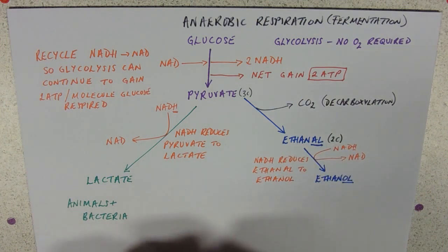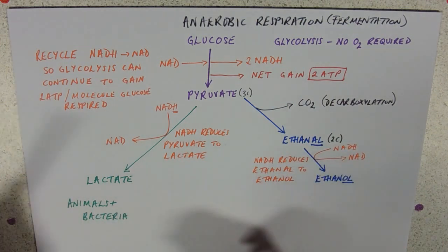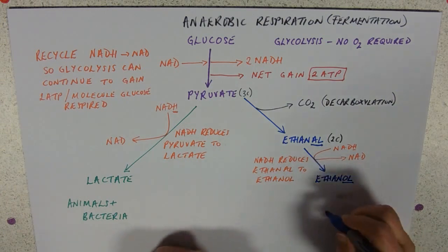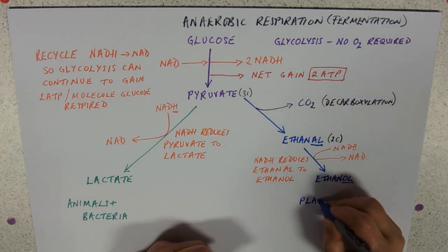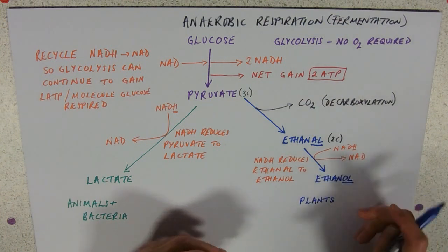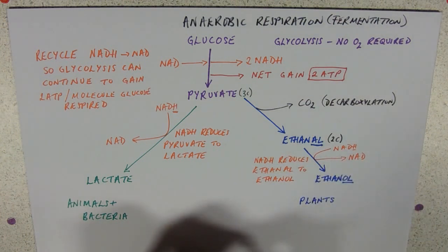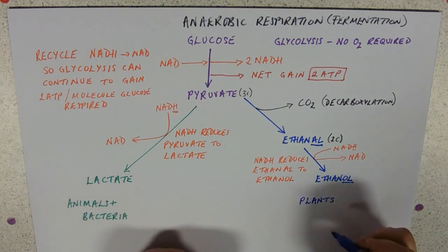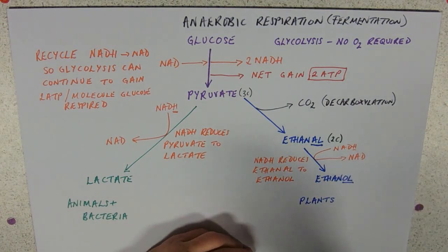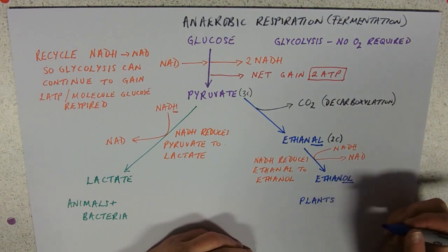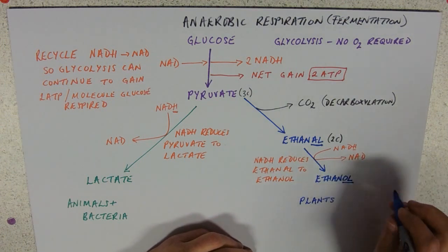Types of organisms that do this: we're looking at plants. If you imagine rice in a paddy field, its roots are under water, they're not getting any oxygen — they will be churning out ethanol. Not that I suggest you go and drink the water out of a paddy field; it'll be disgusting.